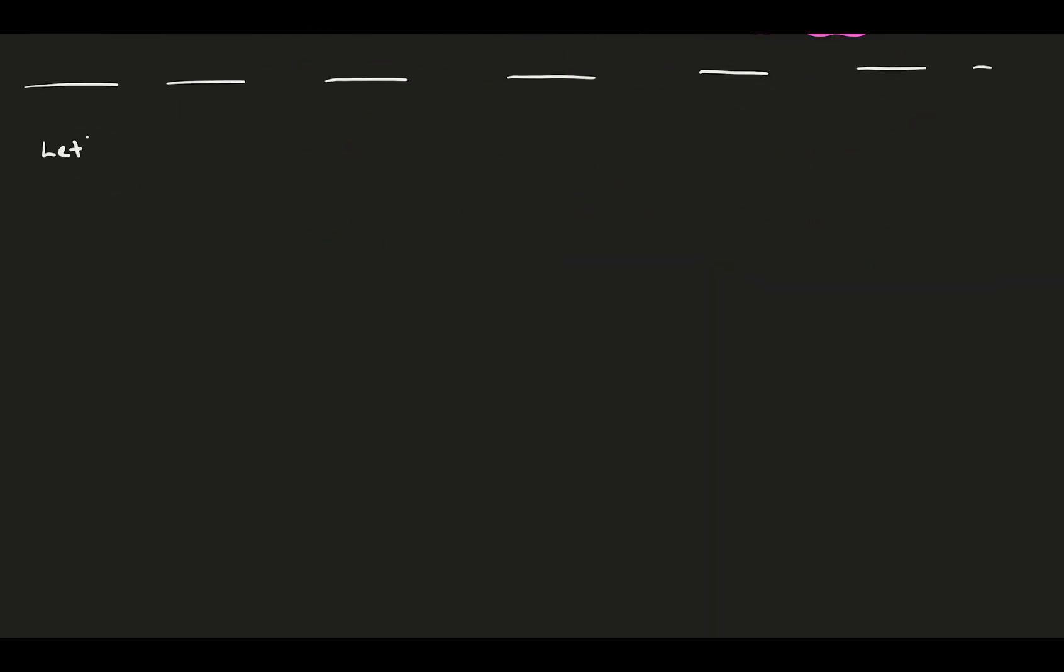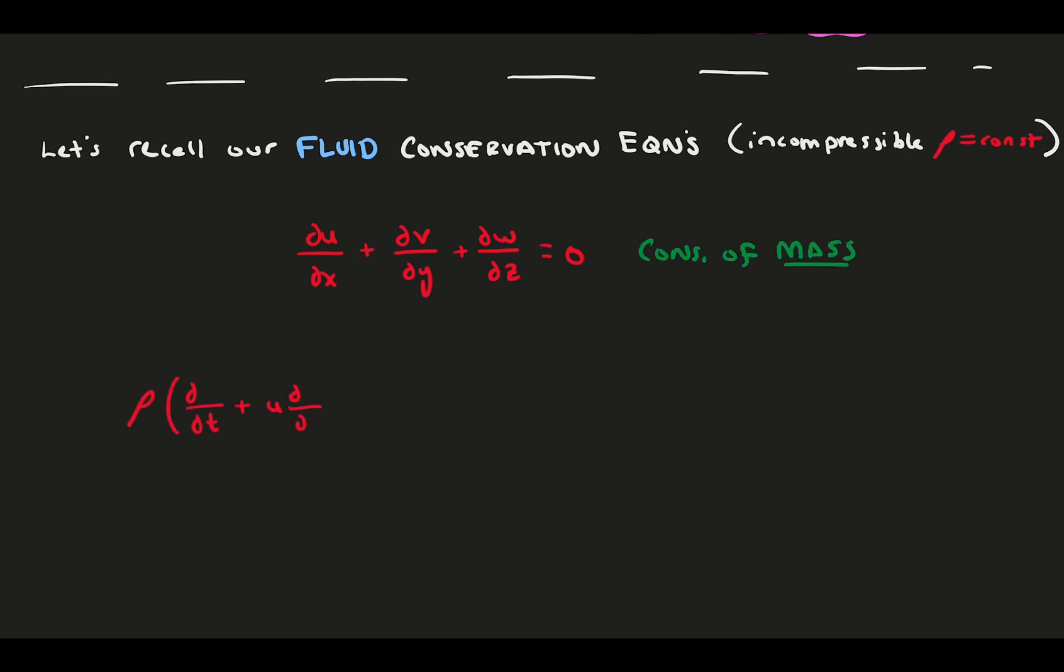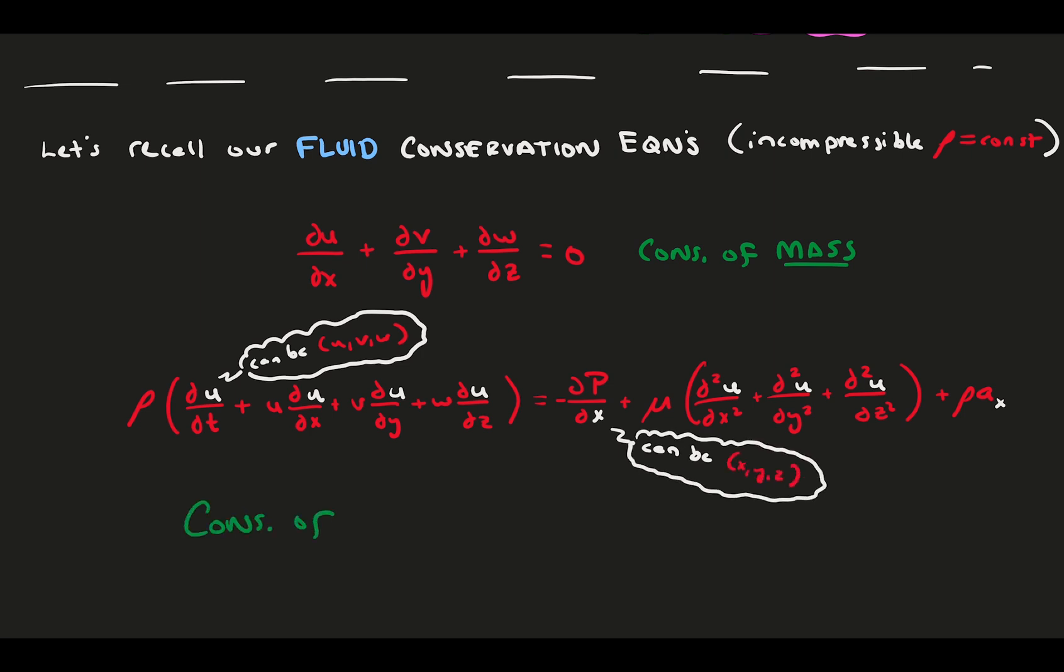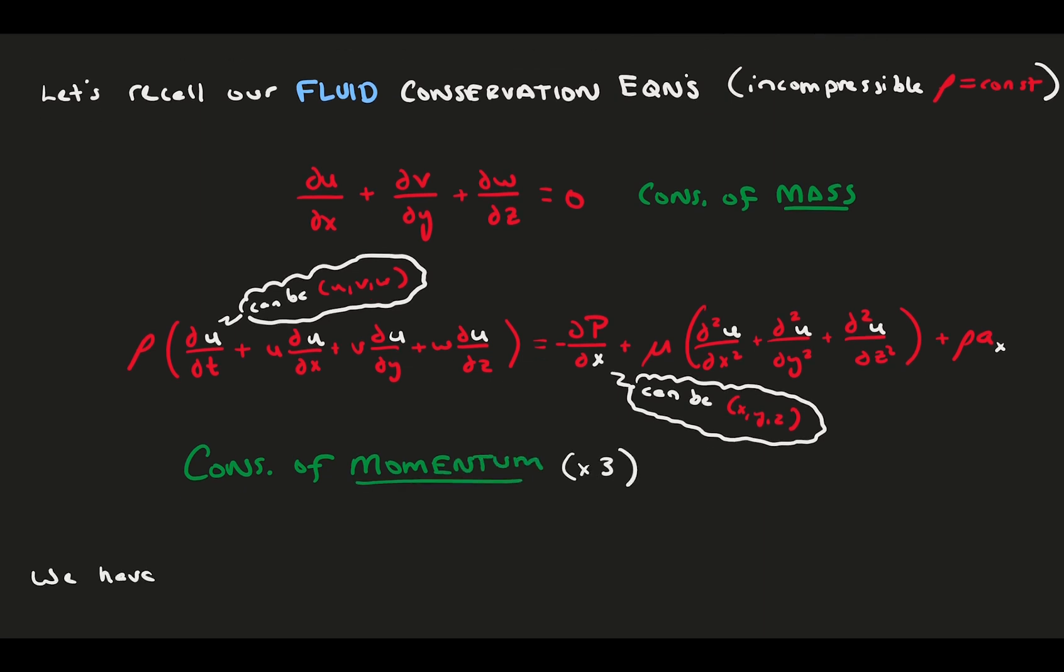Let's jump in. Recall our conservation equations for an incompressible fluid in differential form for an Eulerian perspective in Cartesian space. First is the conservation of mass. And then we have the conservation of momentum, or Navier-Stokes equations. Here, I leave the skeleton as always, that's the same for all three equations red, and the interchangeable variables as white, which can either be uvw and xyz respectively. These are four independent equations. And, we have four main unknowns, the three velocity components uvw, and the pressure field p.